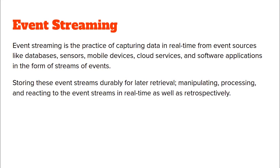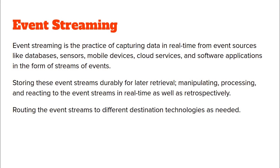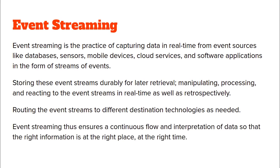The next thing that we do with these events is that we store them so that we can retrieve them later on. We also perform manipulation, processing, and we react to these events either in real time or retrospectively — meaning at a later point in time. Next, we might want to route these events to different destination technologies as needed. Event streaming ensures that a continuous flow and interpretation of various kinds of data happens so that the right information is at the right place at the right time.